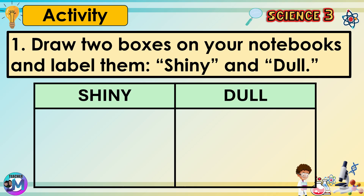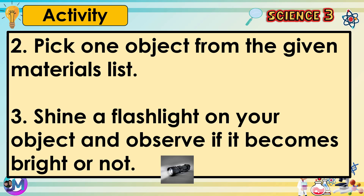1. Draw two boxes on your notebooks and label them. 2. Pick one object from the given materials list. 3. Shine a flashlight on your object and observe if it becomes bright or not.